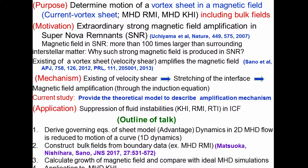This is the numerical result, and the mechanism is as follows. First, there is a velocity shear in the system, and the velocity shear stretches the interface. The extension of the interface causes magnetic field amplification through the induction equation. The current study provides the theoretical mechanism of this amplification. As an application, we consider the suppression of fluid instabilities in inertial confinement fusion.